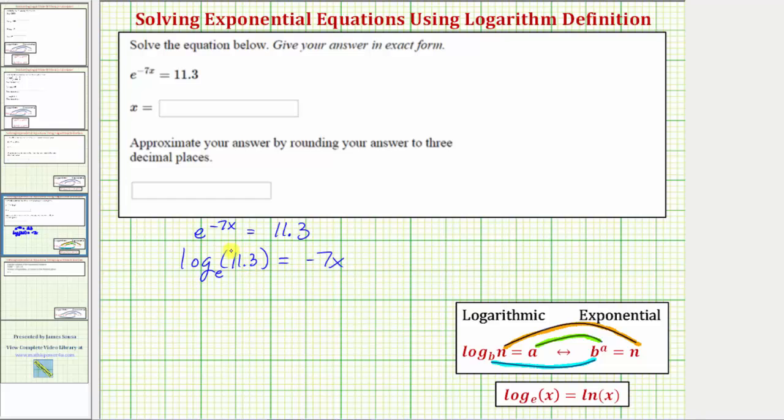And for one last check, if we were to go from the log equation to the exponential equation, we start with the base and work around the equal sign, we would have e raised to the power of negative seven x equals 11.3. So our log equation is correct.